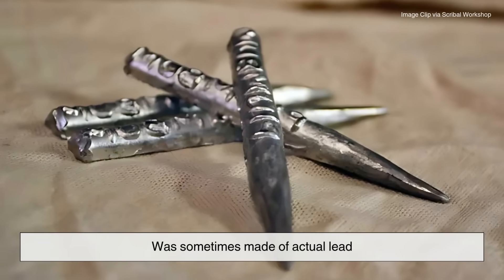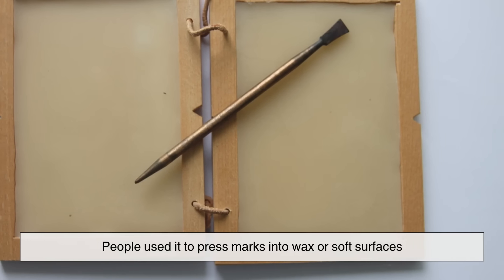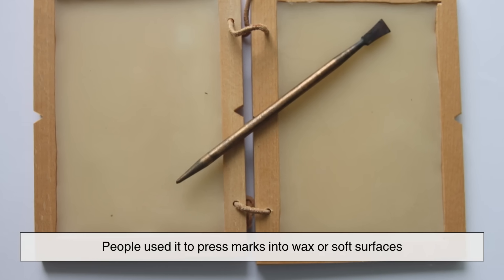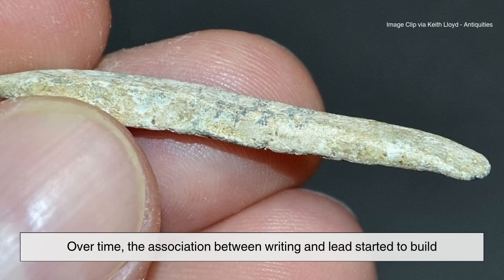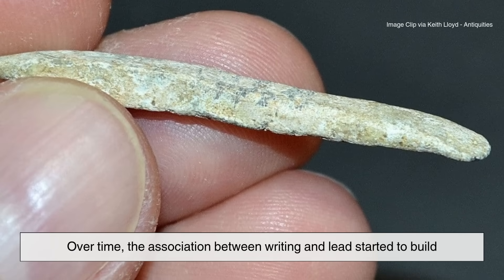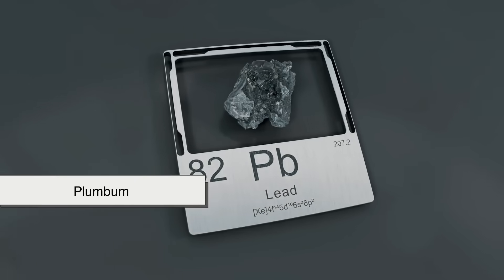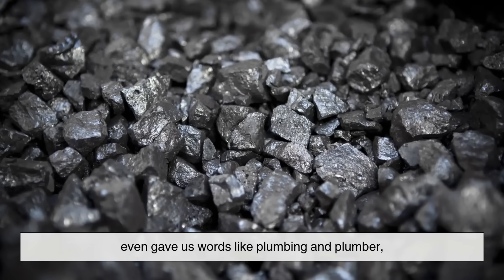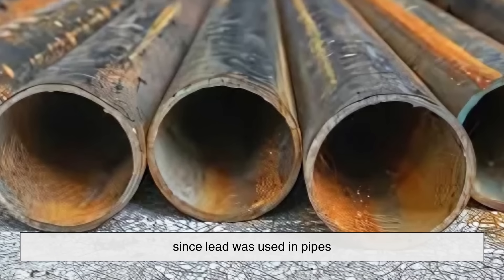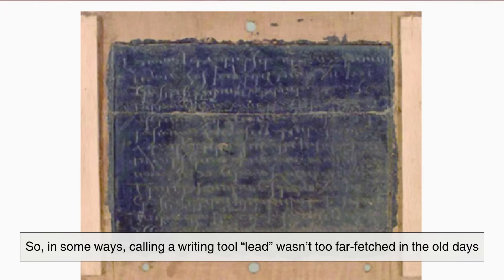The Roman stylus, for example, was sometimes made of actual lead. People used it to press marks into wax or soft surfaces. Over time, the association between writing and lead started to build. The word plumbum, the Latin term for lead, even gave us words like plumbing and plumber since lead was used in pipes. So in some ways, calling a writing tool lead wasn't too far-fetched in the old days.